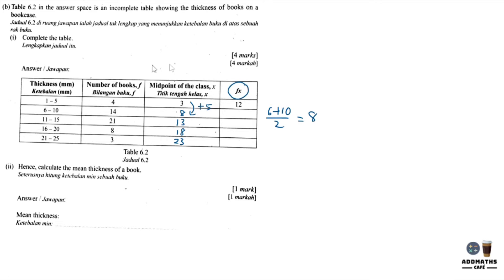So how to calculate fx? It means f times x. So 4 times 3, you get 12. 14 times 8, by using calculator, you'll get 112. 21 times 13, you will get 273. 8 times 18, you'll get 144. And 3 times 23, you will get 69. So you have completed the table.